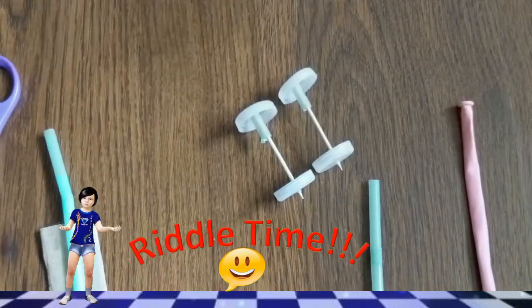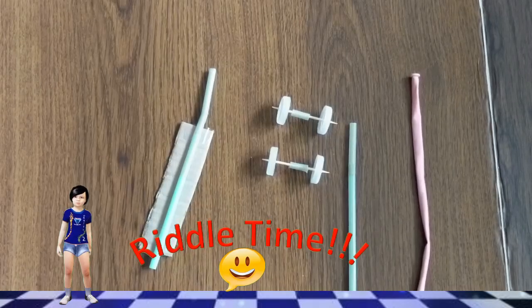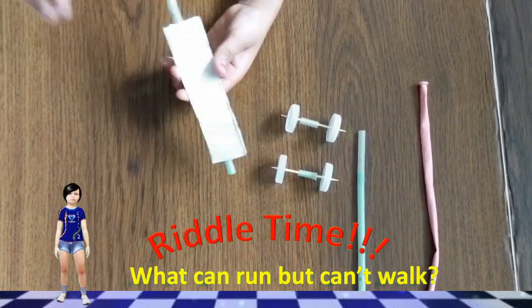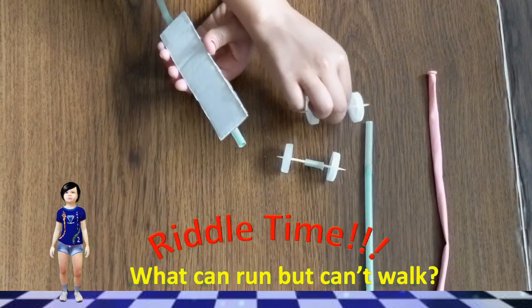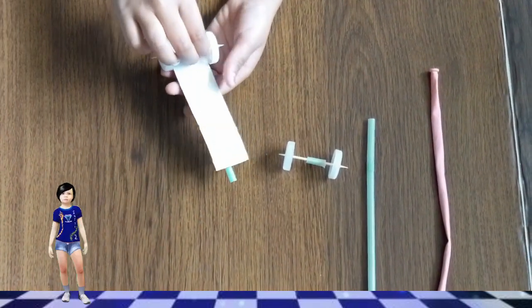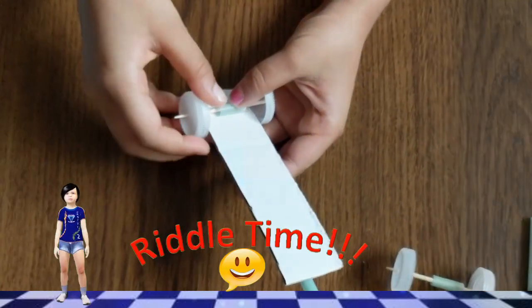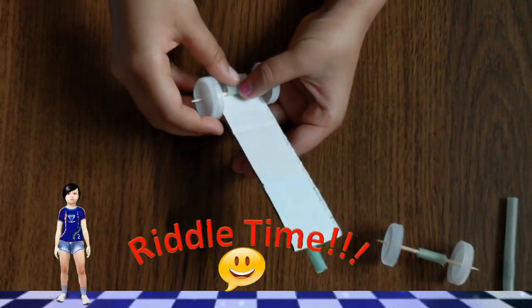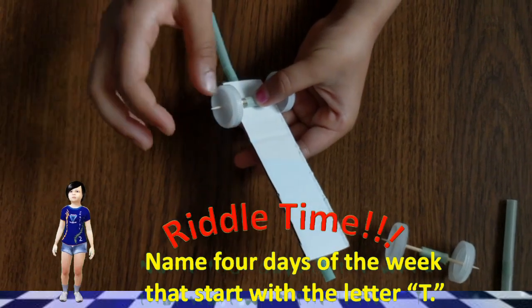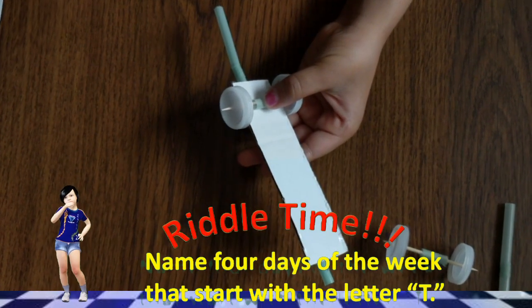Let's go for a riddle! What can run but cannot walk? I am going to tell you the answer! A drop of water! Now, name 4 days of the week! Let's start with the letter T! Think! Think! Think!